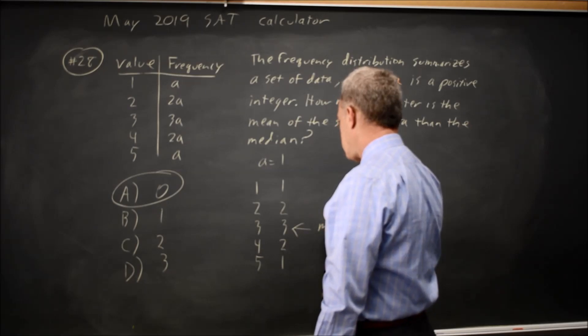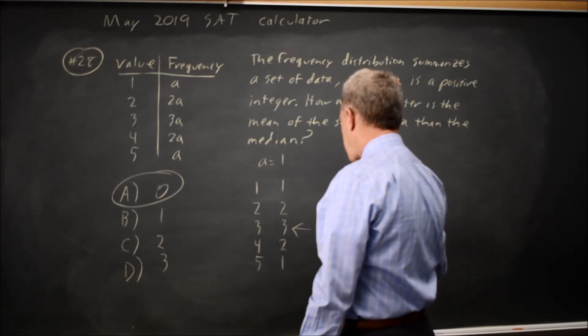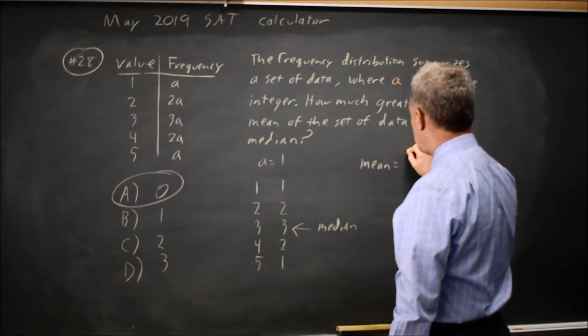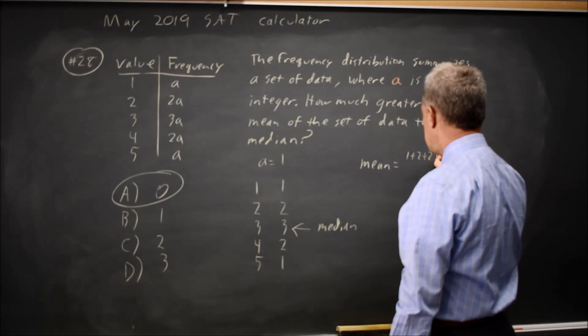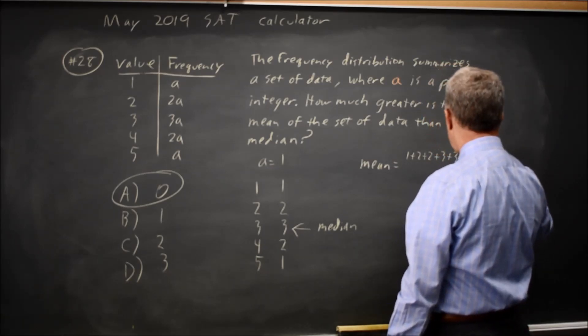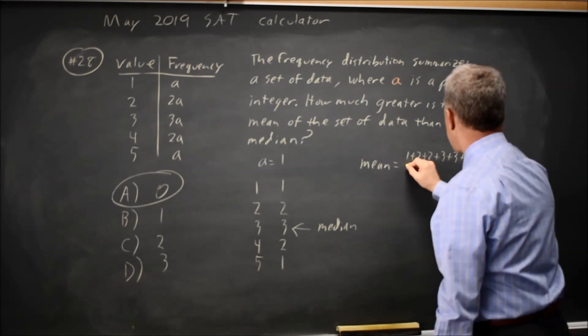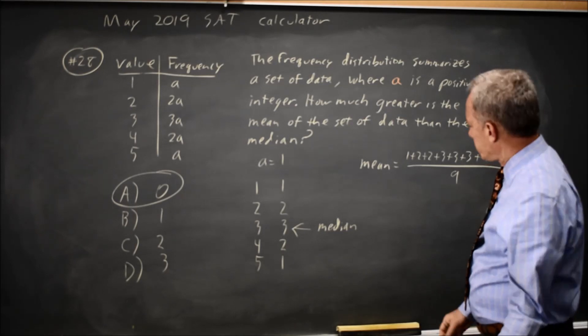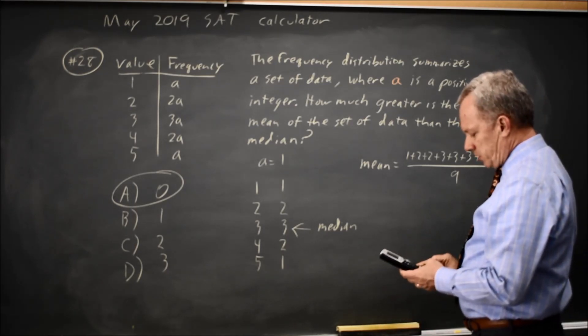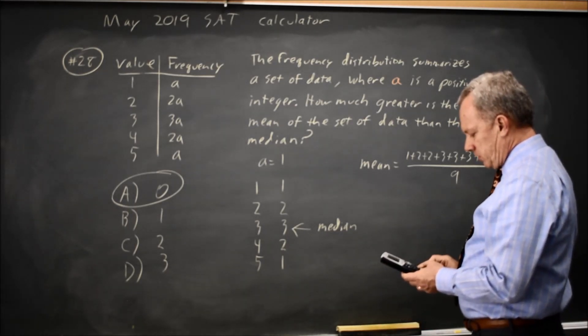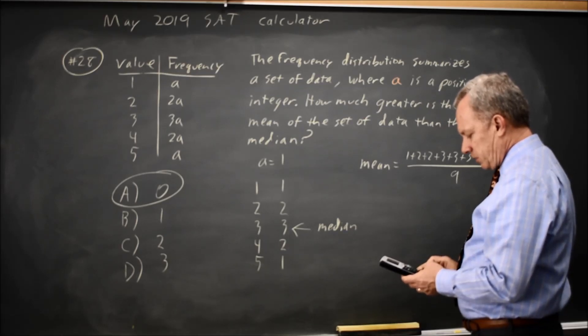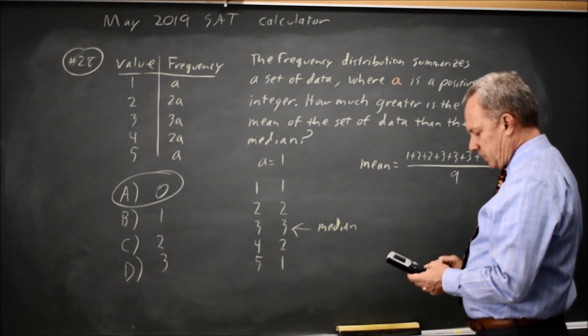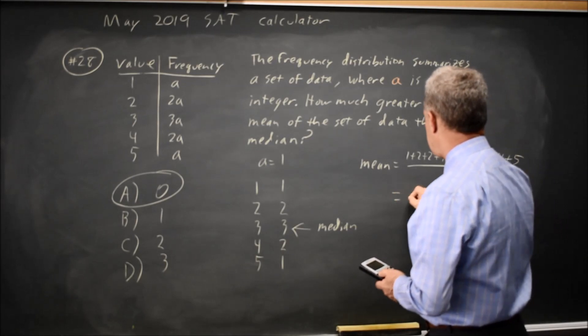which is pretty quick, and I could go through the work of calculating the mean. The mean is 1 plus 2 plus 2 plus 3 plus 3 plus 3 plus 4 plus 4 plus 5, all divided by 9. And adding that up, 1 plus 2 plus 2 plus 3 plus 3 plus 3 plus 4 plus 4 plus 5 over 9 is 3.